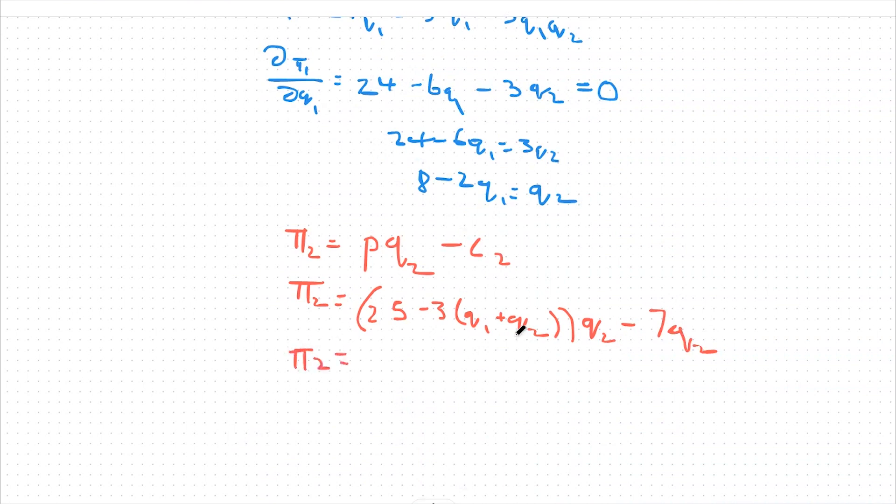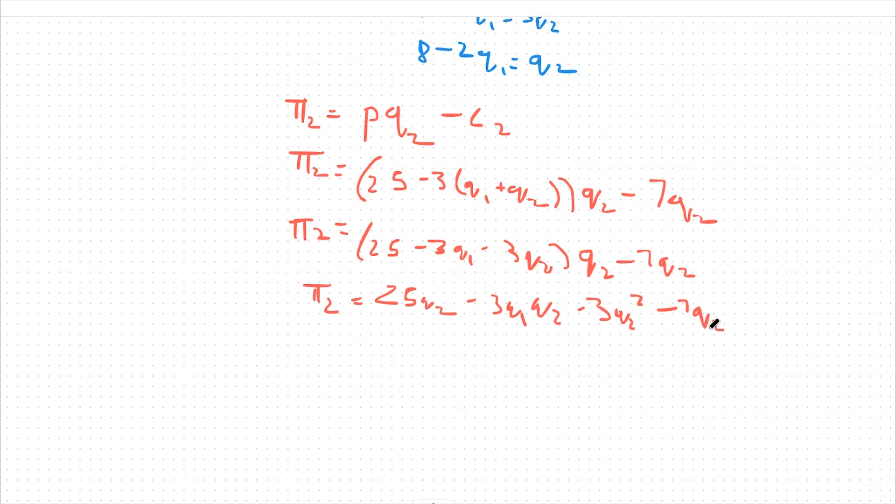So that means that our new function, we're going to expand this out. We're going to say 25 minus 3q1 minus 3q2 all times q2 minus 7q2 is our new profit function. And then I'm going to multiply out by q2 here. So profit 2 is equal to 25q2 minus 3q1 plus q2 minus 3q2 squared and then minus 7q2. So bear with me. There's a lot of math in this question, but we will get there. So from there, I'm going to subtract like terms here. I'm going to say profit 2 is equal to 18q2 minus 3q1q2 minus 3q2 squared.